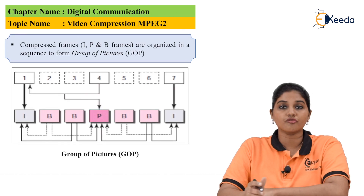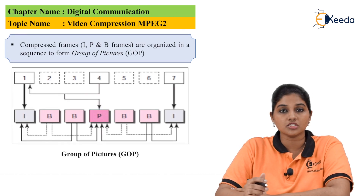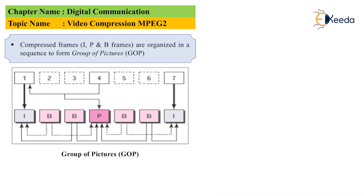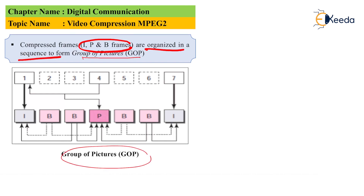Before understanding the various frames provided by MPEG-2, we need to understand how frames are organized into groups. The compressed frames — I, P, and B frames — are organized in a sequence called a Group of Pictures, or GOP. The figure shows a GOP which consists of I, B, and P frames forming one GOP, while another set forms a second GOP.